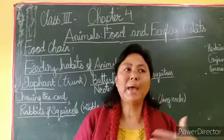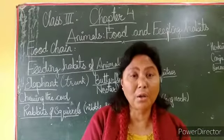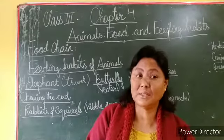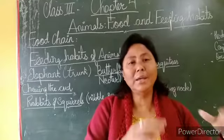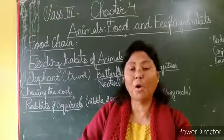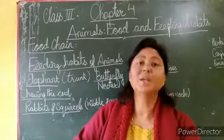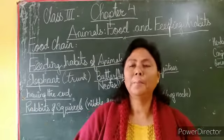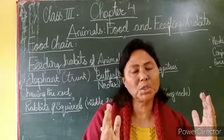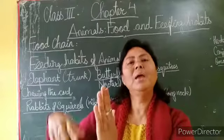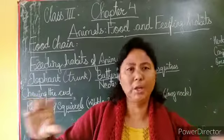Another example: insects are eaten by frogs. And what is the food of insects? They are dependent on plants. So plants are eaten by insects, insects are eaten by frogs, frogs are eaten by snakes, and snakes are eaten by mongoose. This is also a food chain. Since you are in class 3, you should remember: plants are eaten by goats, and goats are eaten by animals or human beings. This is also called a food chain.